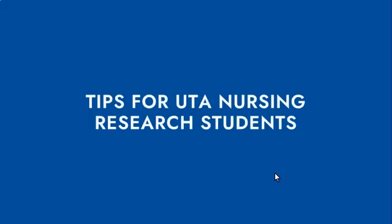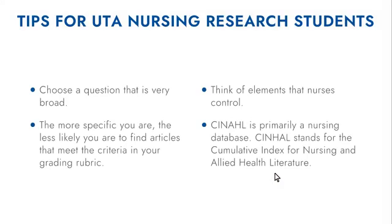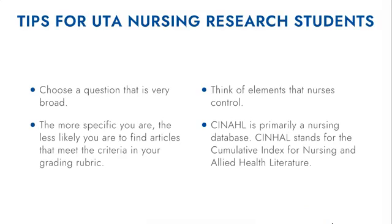There are a number of tips for UTA nursing research students when you're trying to figure out what kind of PICO question you want to ask. You want to choose a question that's very broad — the more specific you are, the less likely you are to find articles that meet the criteria of your grading rubric. There are so many required elements that must be contained in your article that you have to gather as many articles as possible to find the handful you'll need for your assignment.